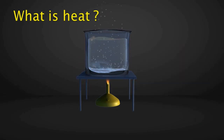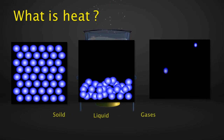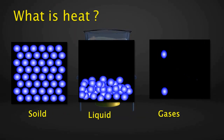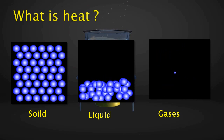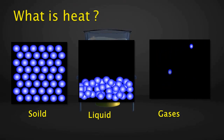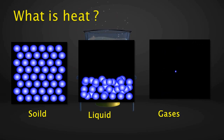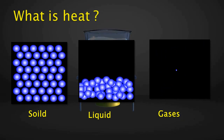When a solid, liquid, or a gas is heated, its molecules gain energy and start moving faster. The more we heat the substance, the faster its molecules move. Heat energy is therefore the energy of movement of molecules.